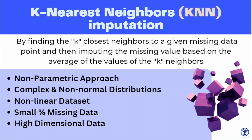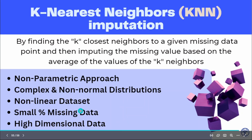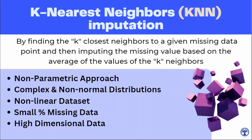KNN imputation is most effective when there is a small amount of missing data, as the accuracy of the imputation is directly proportional to the amount of missing data. It is also really helpful when used on high-dimensional datasets, as it considers the relationship between all the features. However, it's important to keep in mind that KNN imputation may not be appropriate for datasets with large amounts of missing data or noisy data, as it could lead to over-smoothing of the data and loss of information.